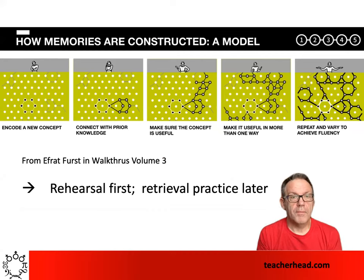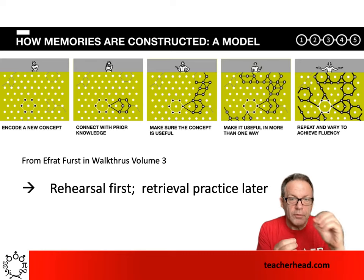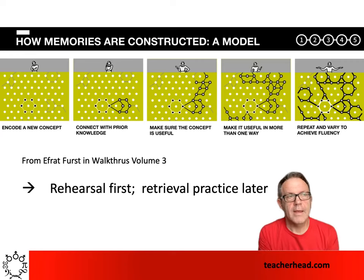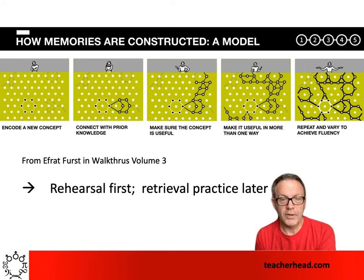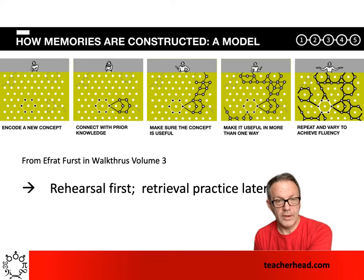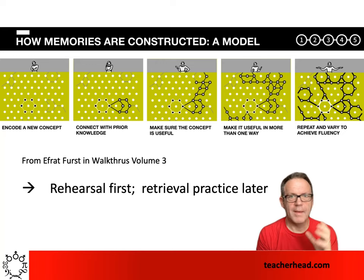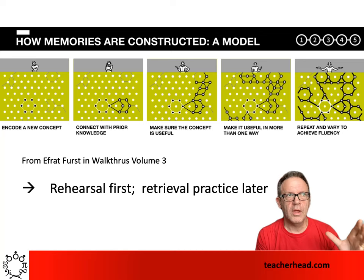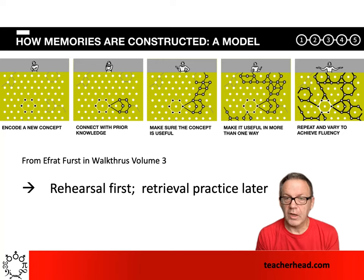One particular development I think is interesting is Efrat Furst's exploration of how we form memories in our long-term memory through rehearsing around a tight set of information which we then encode — so it's sort of in our memory. Then we retrieve that information and strengthen those pathways over time, eventually leading to fluency. There's a journey from that initial encoding through to using the information and then to fluency of knowing something more or less permanently. A lot of false dawns with implementing retrieval practice go too quickly to the retrieval mode, as if we've already encoded successfully — whereas often students didn't really encode successfully in the first place.